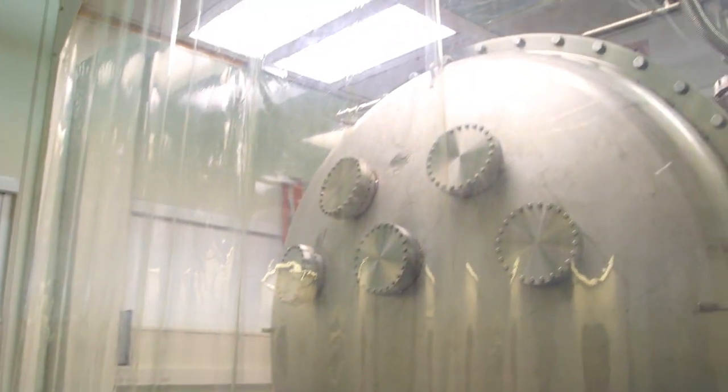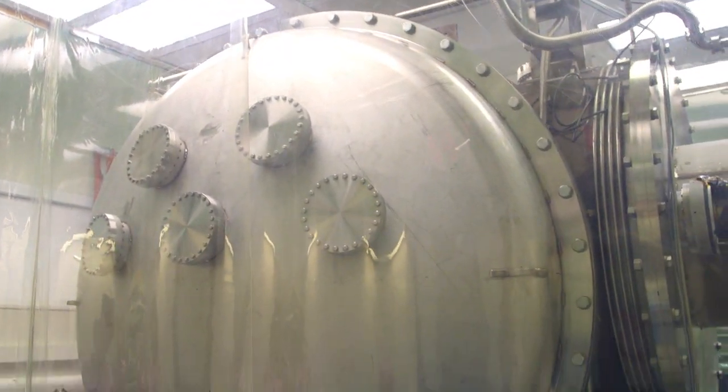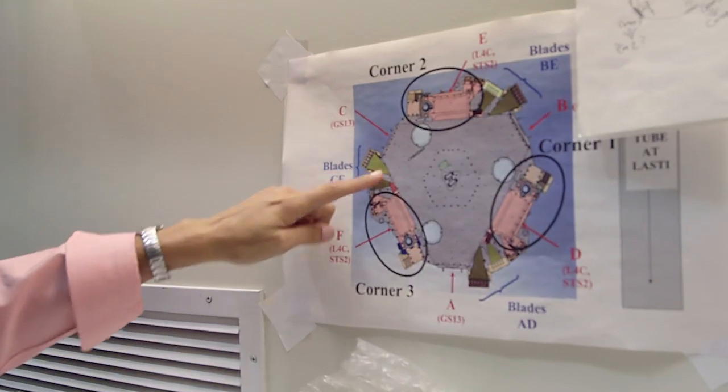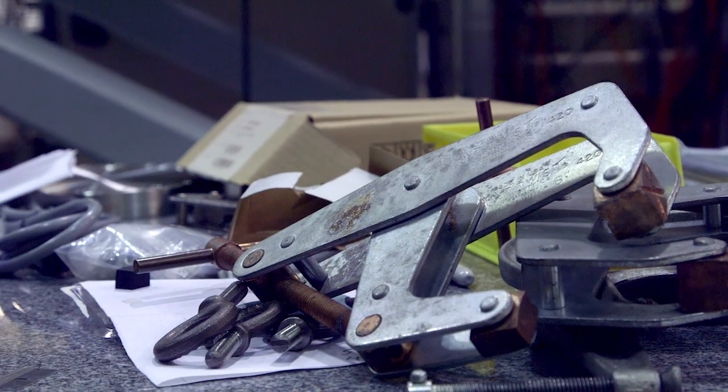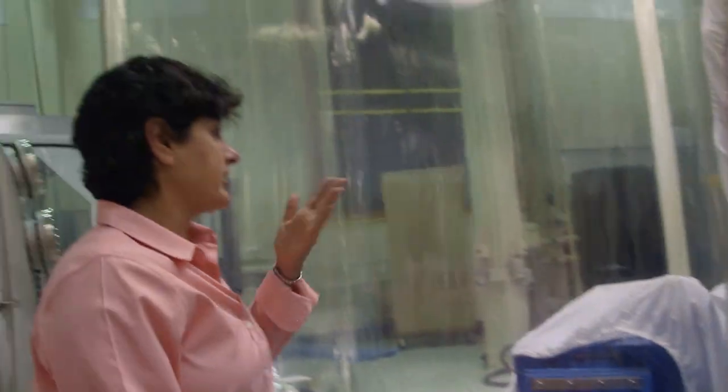So this is a vacuum chamber, and inside each one of these types of chambers lives a mirror of LIGO. This is very rare for us, but it turns out that this chamber is actually not under vacuum right now.